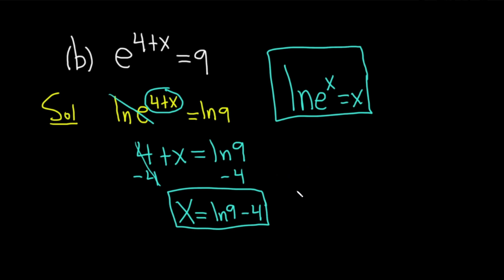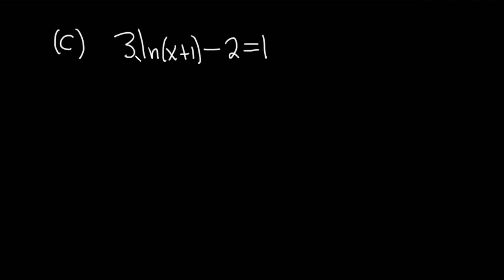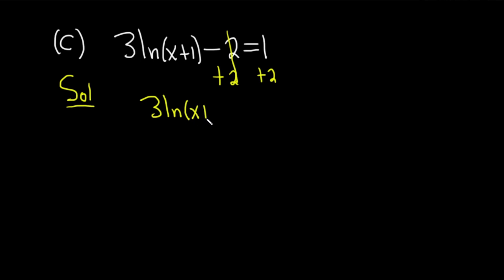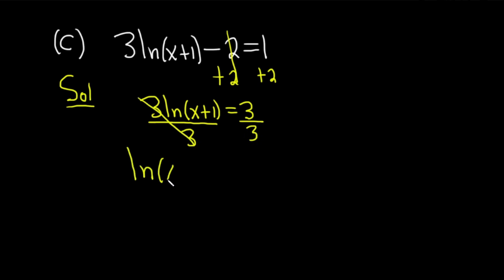Let's go ahead and do one more example. Part C, we have to solve the equation: 3 times the natural log of (x plus 1) minus 2 equals 1. Whenever you have a single logarithm in an equation, you want to isolate the single logarithm. So we'll start by adding 2 to both sides — these cancel — we get 3 times the natural log of (x plus 1) equals 1 plus 2, which is 3. Now, this natural log is being multiplied by 3, so to get rid of the 3, we divide both sides by 3. We end up with the natural log of (x plus 1) equals 1.